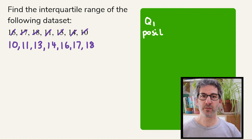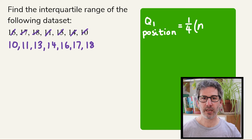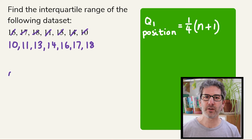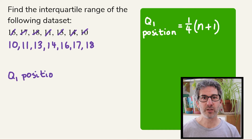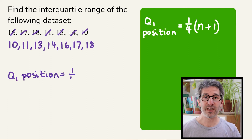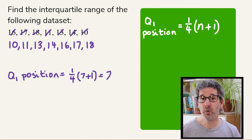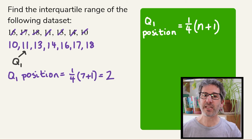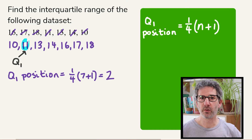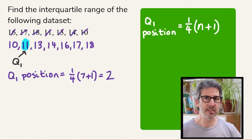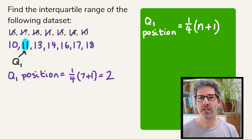To find the position of the first quartile, all you have to do is calculate a quarter of (n + 1), where n is the number of values in your data set. In this example we've got seven values, so it's a quarter of (7 + 1) — in other words, a quarter of 8, which is 2. So the lower quartile, Q1, is the second value along, which in this example is 11.